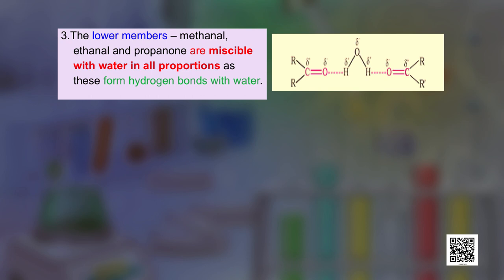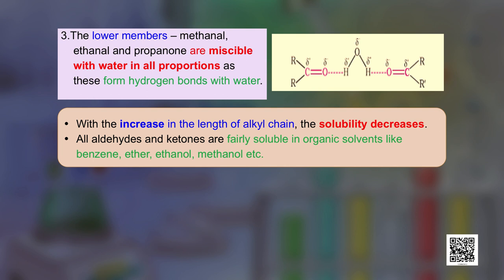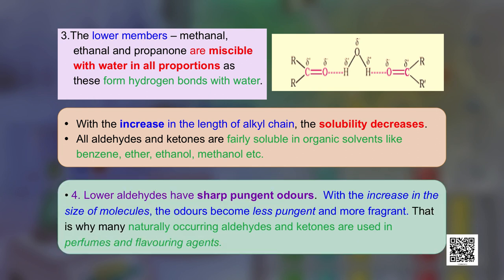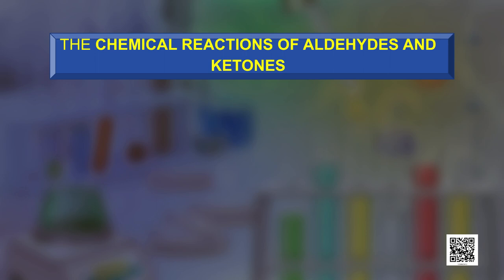The third physical property is miscibility. The lower members — methanal, ethanal, and propanone — are miscible with water in all proportions as they form hydrogen bonds with water, shown by dotted lines in the figure. With increase in alkyl chain length, solubility decreases as the hydrophobic part increases. All aldehydes and ketones are fairly soluble in organic solvents like benzene, ether, ethanol, and methanol. Lower aldehydes have sharp pungent odors; with increasing molecular size, the odor becomes more fragrant, which is why many naturally occurring aldehydes and ketones are used in perfumes and flavoring agents.